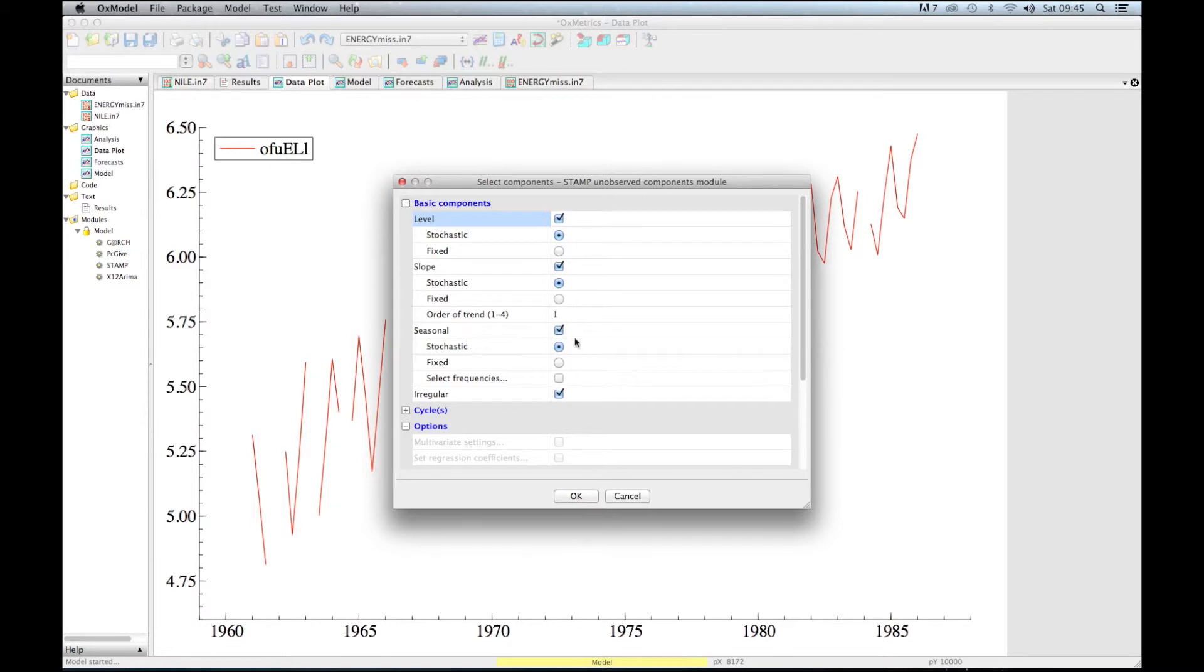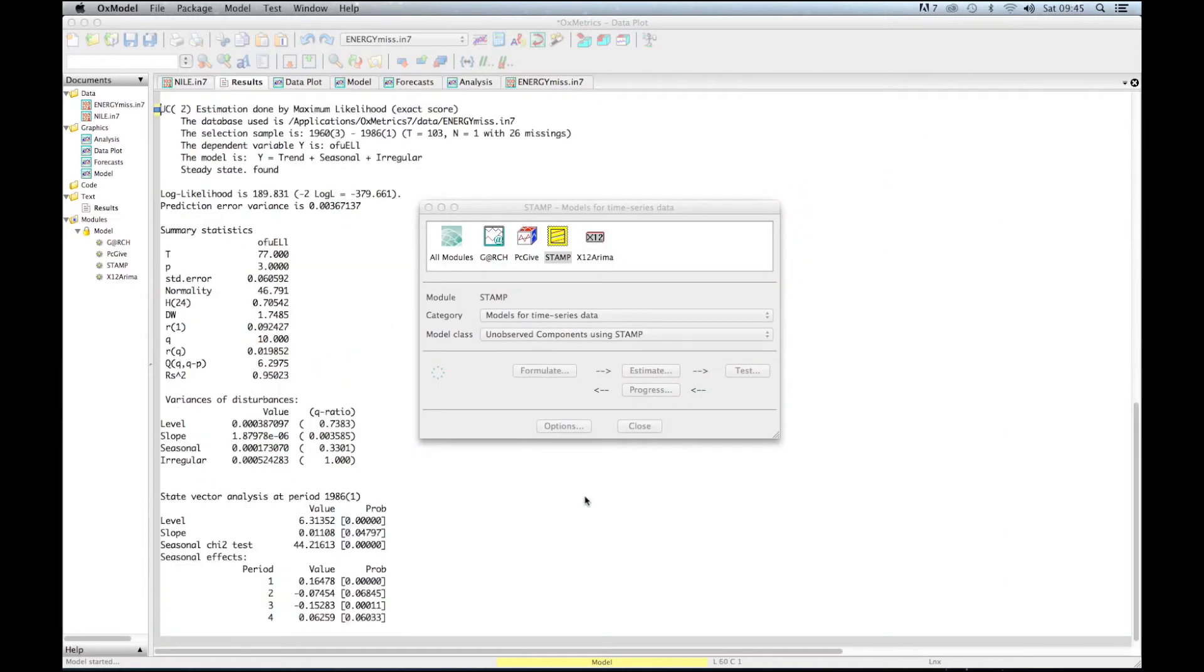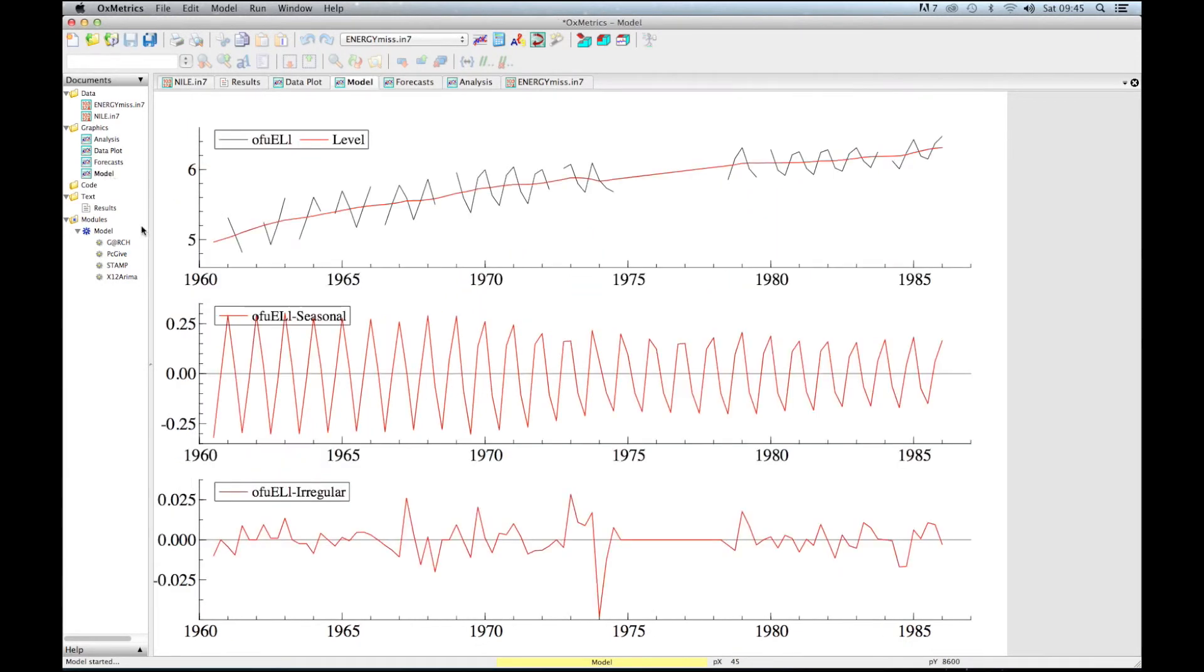The only thing that we now need to do is select the first observation and the last observation. We have various missings, but still we can start at 1960 and end in 1986, and all the missings will be accounted for in the methodology. So we estimate the model. And this is now the decomposition.